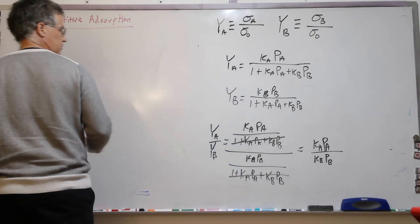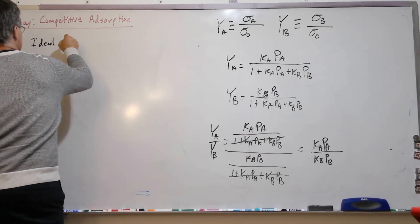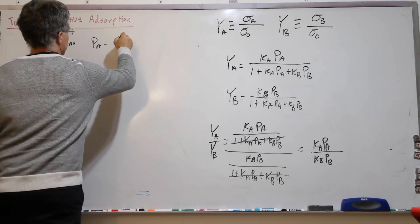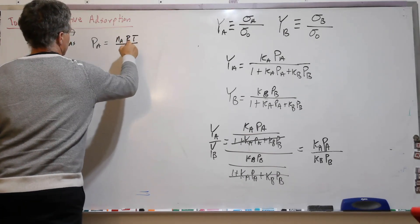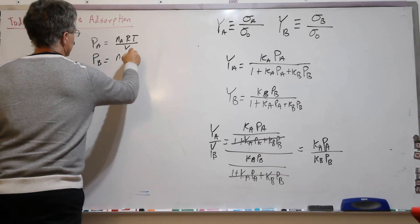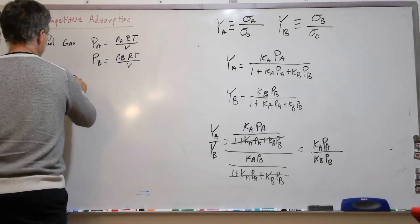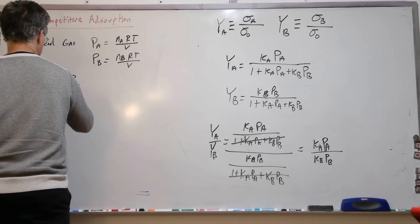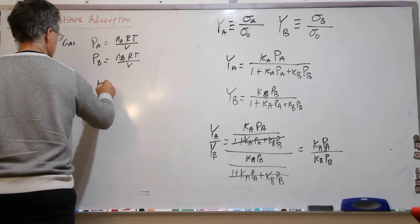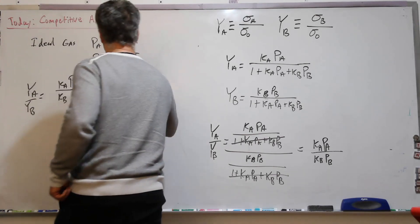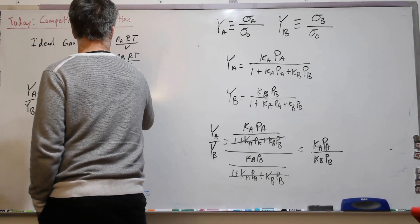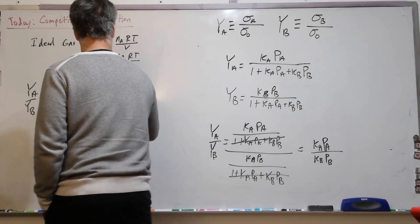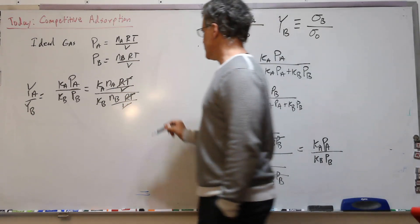We can go one quick step further. If these are an ideal gas, then P_A equals n_A R T over V, and P_B equals n_B R T over V. So P_A over P_B, I guess I'll just write the whole thing. Our R T over V's cancel because we're at the same temperature and the same volume, and we get a mole ratio.